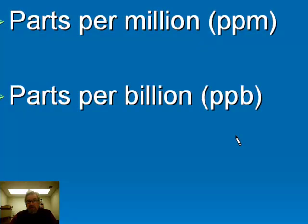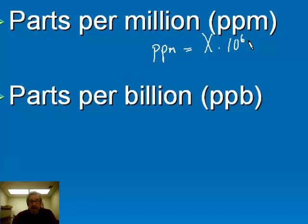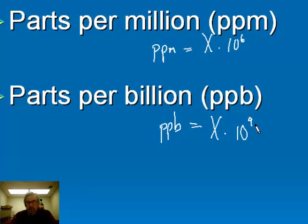There are two concentration units useful for very small concentrations, such as pollutants or toxins. Parts per million (PPM) is the ratio of moles of solute per million total moles — equivalently, mole fraction times one million. Parts per billion (PPB) is the mole fraction times one billion (10⁹). These units matter because there are many pollutants and poisons where very small concentrations are actually a very big deal, and you need a unit that can measure in these small quantities.